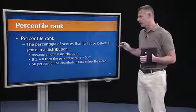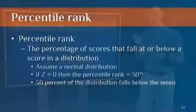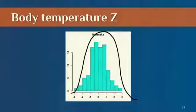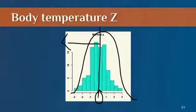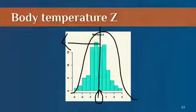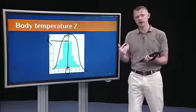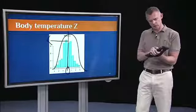So the percentile rank is just the percentage of scores that fall at or below that score in a distribution. So if we're dealing with a perfectly normal distribution and we've converted everything to Z scores, then I know that the percentile rank for a Z of 0 is 50%. If I have a nice normal distribution, I've converted it to Z, so the mean is 0, then below that score is going to be 50% of the distribution. In other words, the percentile rank of a Z of 0, or 98.6 degrees Fahrenheit, is 50%. 50% of the distribution falls below the mean.